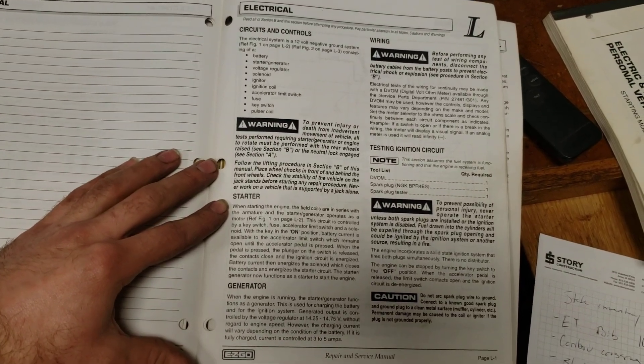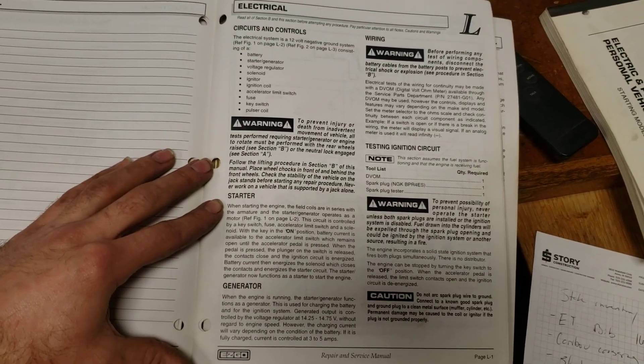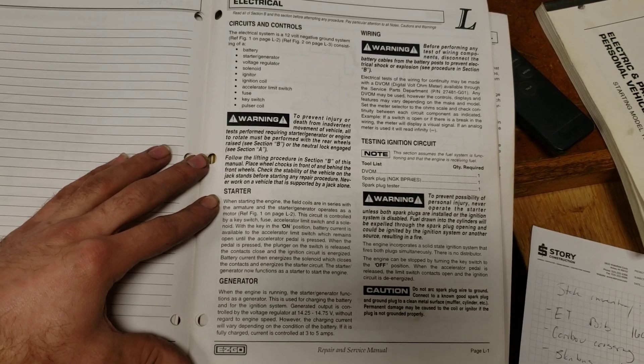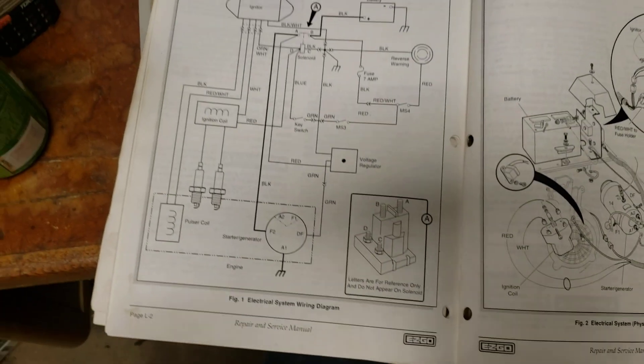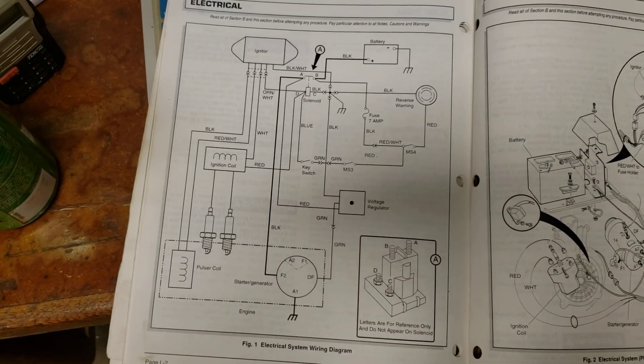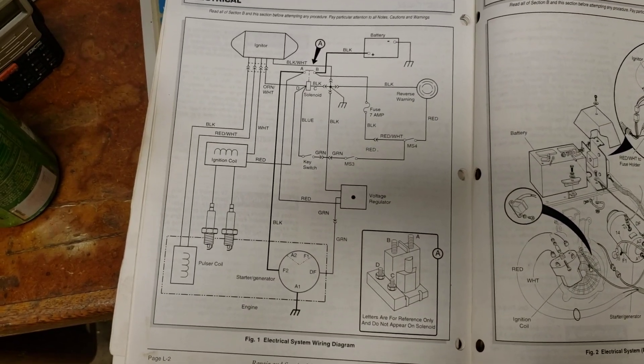This one is a little bit about testing the ignition circuit, but then we'll find more information on the next couple pages here. So here's a diagram of what your ignition circuit should look like.